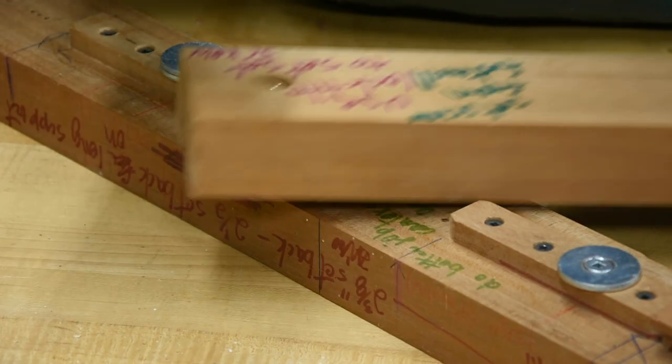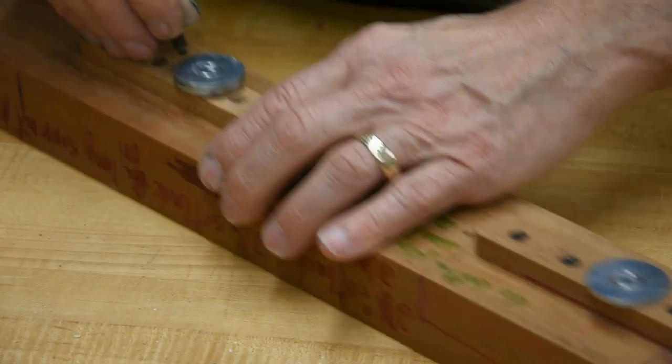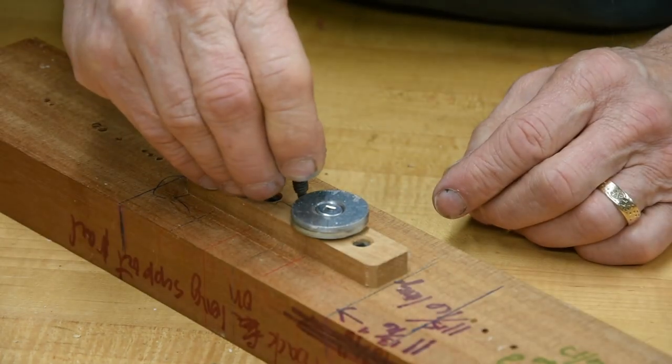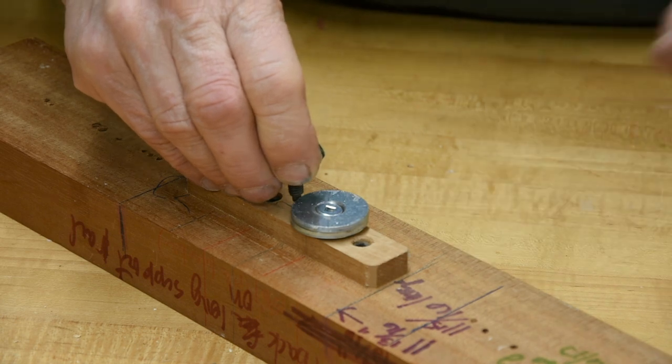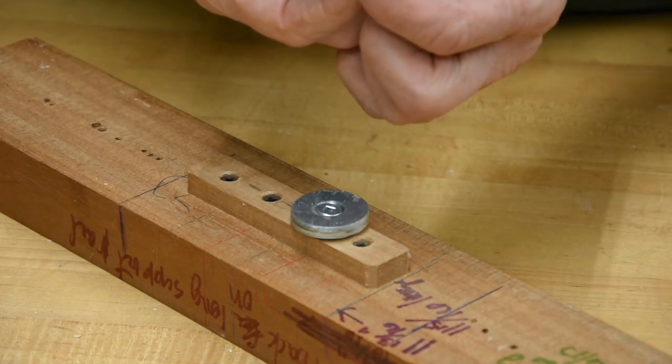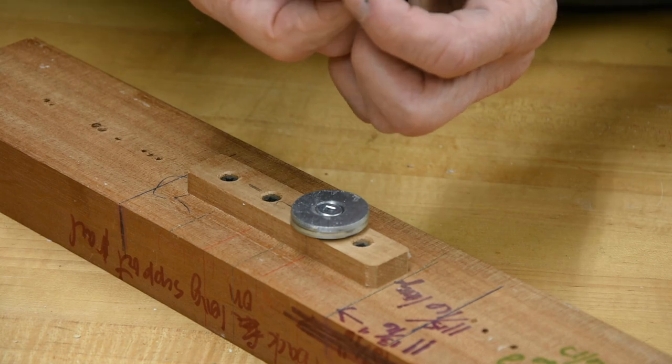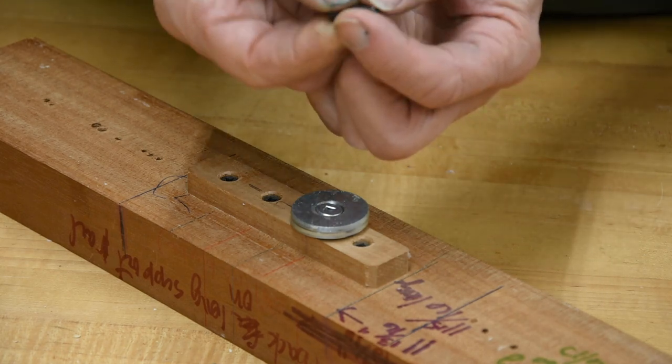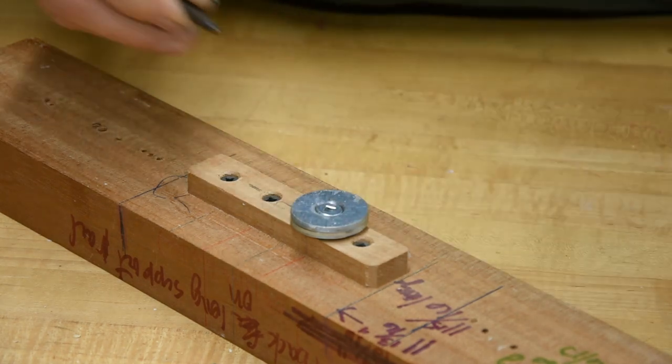I need that because this guy's going to run up against that washer to stop the whole mechanism, and I don't want threads on there to get all bunged up. I might not ever be able to back that set screw all the way out if the threads get all bunged up.